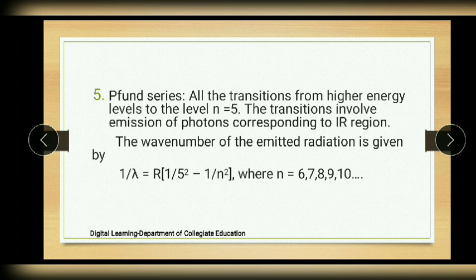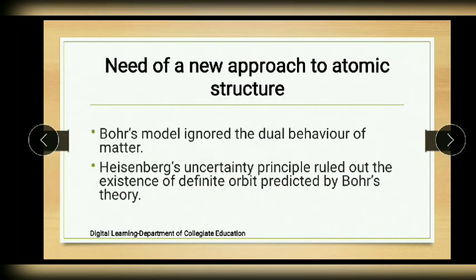The frequencies of the spectral lines calculated using the equation obtained from Bohr's theory are in good agreement with experimentally obtained values, giving strong support to Bohr's theory of the hydrogen atom. However, certain facts go against Bohr's theory, giving rise to the need for a new approach to atomic structure. Let us see what those are.